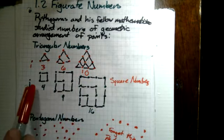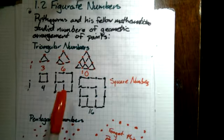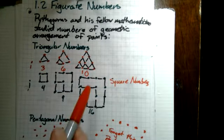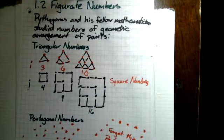Our square numbers work the same way. We've got a point for one, four points for four, nine for nine points for three squared, and 16 for four squared.